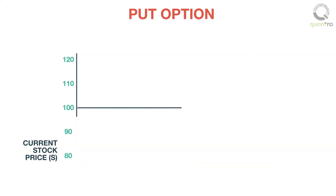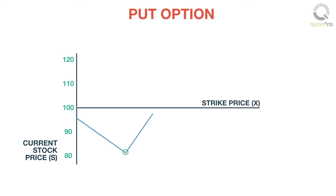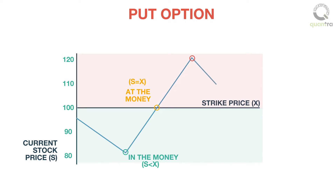In the case of a put option, if the underlying price is less than the strike price, then it is in the money. And if the underlying price is greater than the strike price, then the put option is out of the money.